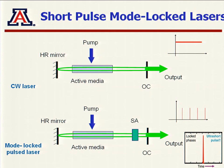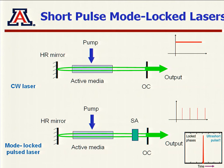To make a laser mode-locked in passive mode, you need a saturable absorber inserted inside the cavity. Saturable absorption is one of the applications of nonlinear optics that has reached commercial products — along with lasers and second harmonic generation crystals. The typical saturable absorbers used are SESAMs — semiconductor saturable absorber mirrors — where light goes into the saturable absorber mirror and comes back.